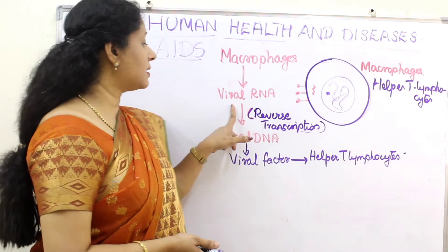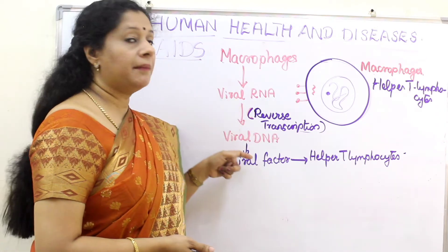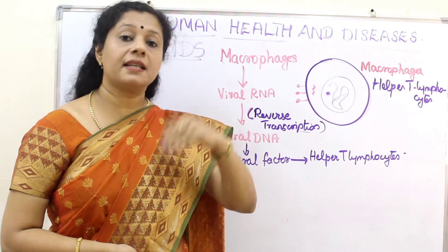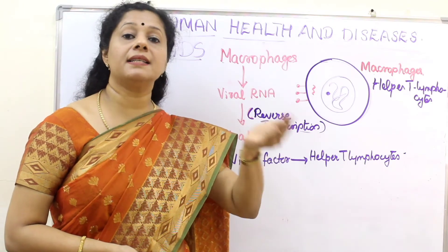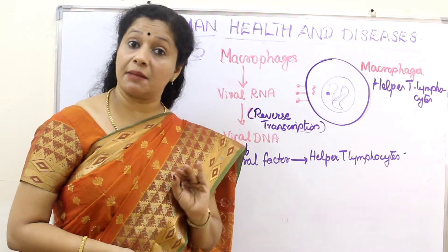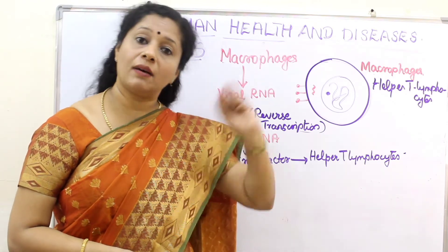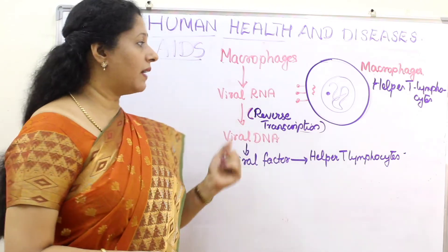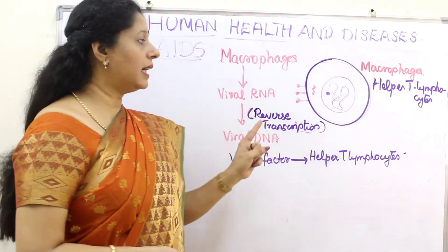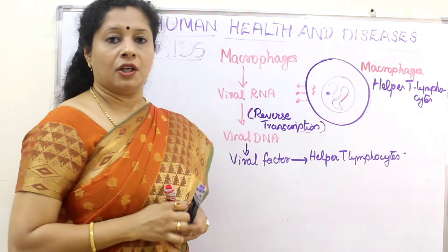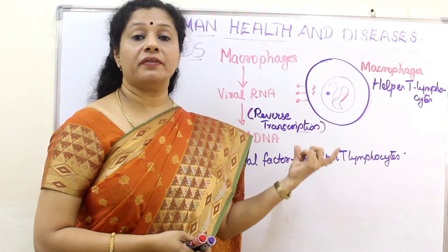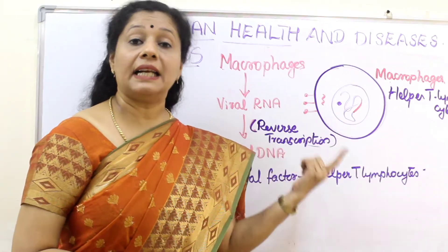So what should happen? Reverse transcription — RNA should become DNA. We already learned that transcription is DNA making RNA; reverse transcription is RNA making DNA. For reverse transcription to happen, the enzyme reverse transcriptase is required, and the virus brings this enzyme itself, as we saw in the structure. The virus, using its own enzyme, makes the RNA into double-stranded DNA. That double-stranded DNA then gets incorporated into the host cell's DNA using an enzyme called integrase. So when the genome of the macrophage multiplies, the viral DNA also multiplies along with it.